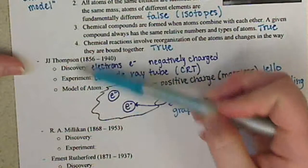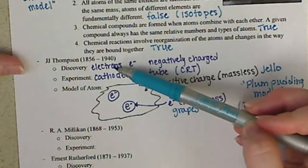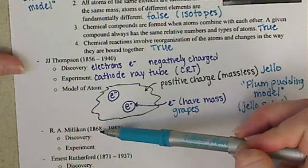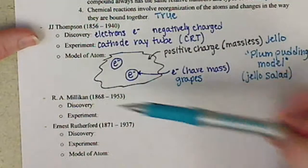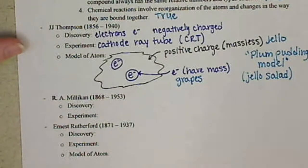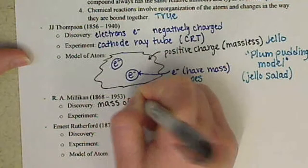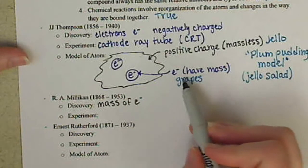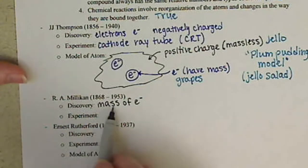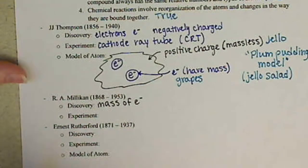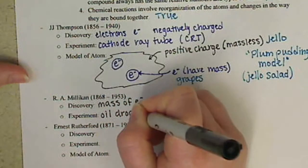Now, JJ Thompson, so that's his model of the atom, the discovery of the electrons. R.A. Millikan, he is, his discovery was basically the mass of the electron. Since JJ Thompson did say that electrons have mass, Millikan was able to determine what that mass was. And he did that via what's called the oil drop experiment.